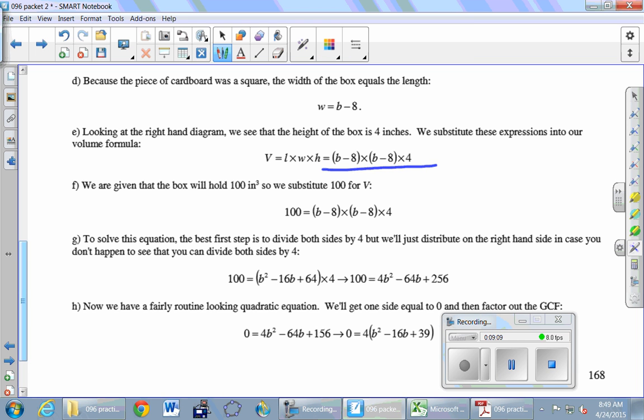Length times width times height. B minus 8 times B minus 8 times 4. And that is supposed to represent the volume of the box. And I want that volume to be 100 cubic inches. That was given in the problem. So now we just change the V into 100. And we get this brand new equation down here.